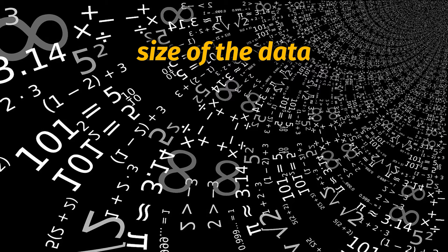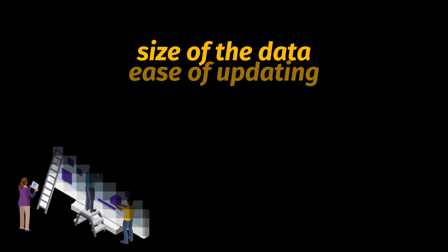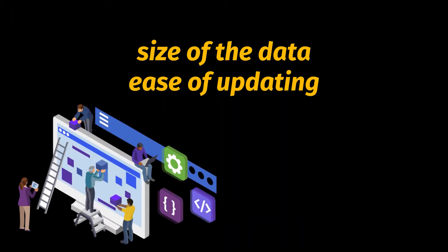What if this data needs to be updated by a hundred people at the same time? How will these people access the same piece of data simultaneously? On top of that, no validation checks are done to ensure that the data stored isn't duplicated.